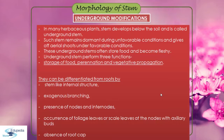Underground stems perform three functions: storage of food, perennation and vegetative propagation. They can be differentiated from roots by stem-like internal structure, exogenous branching, presence of nodes and internodes, and occurrence of foliage leaves or scaly leaves at the nodes with axillary buds. Absence of root cap is another feature that distinguishes stem from roots.